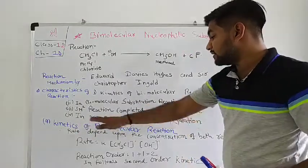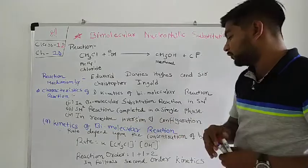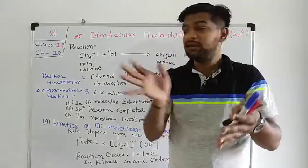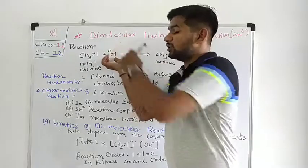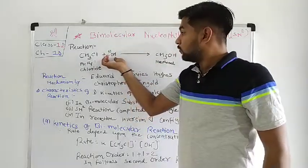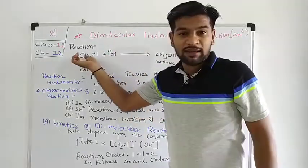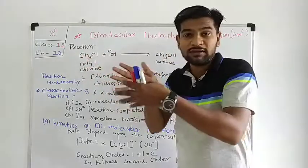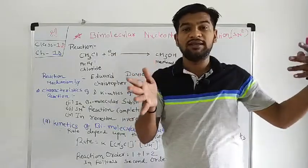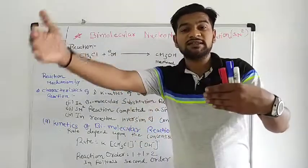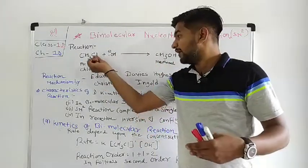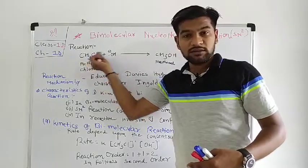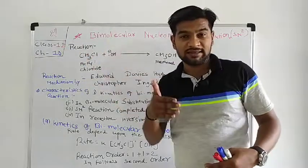The fourth characteristic is inversion of configuration — that is, the mirror image occurs. The nucleophile OH group will attack the CH₃ carbon, and the hydrogens will undergo inversion. It attacks from the opposite direction. On one side there is the nucleophile CL, and OH comes from the opposite side.